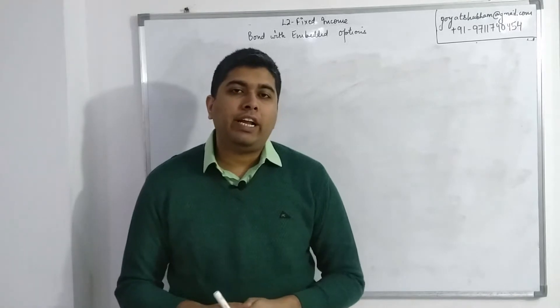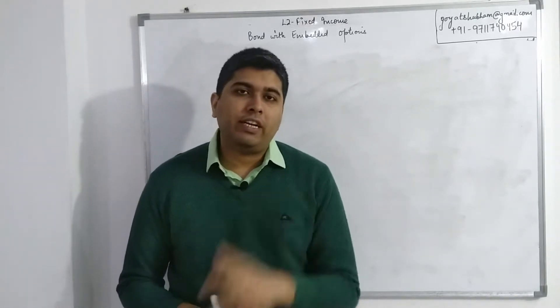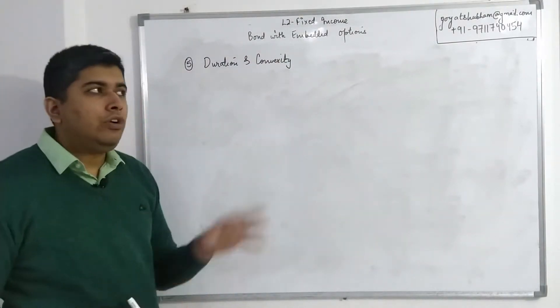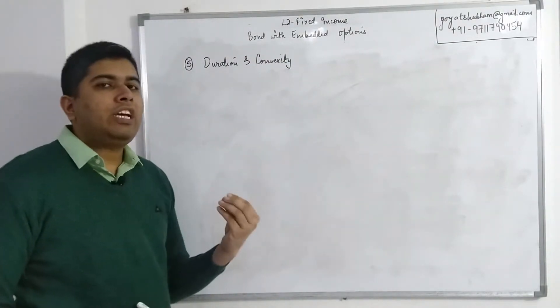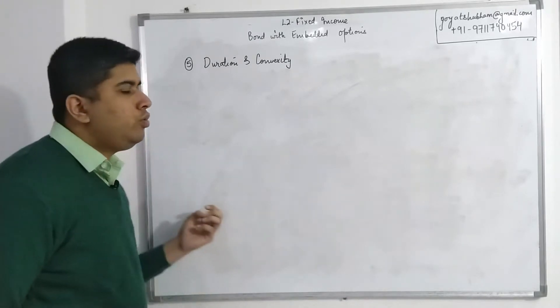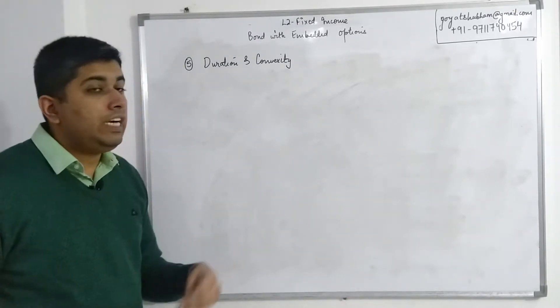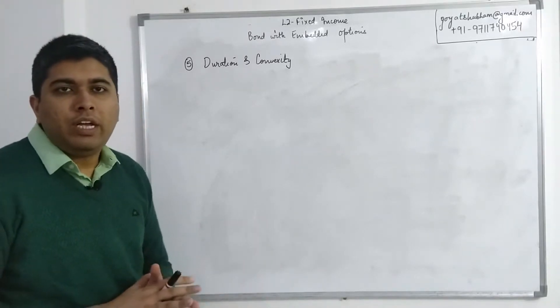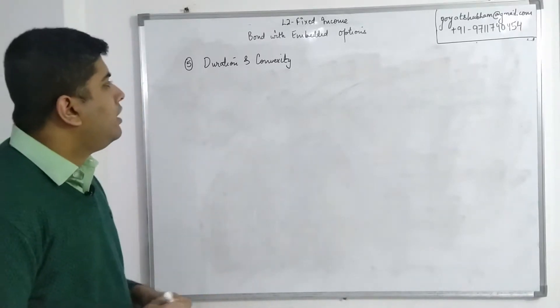In this session we'll be covering the remaining portion of the reading, starting with duration and convexity. Duration and convexity are two concepts that you have already covered at Level 1, and as such Level 2 doesn't really have too much additional to throw at you aside from some theoretical explanations.